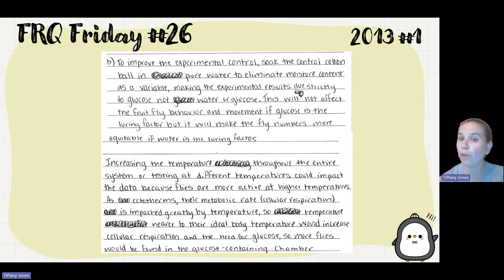So a student said, to improve the experimental control, soak the cotton ball in pure water to eliminate moisture content as a variable, making the experimental results due strictly to glucose, not water or glucose. This will not affect the fruit fly behavior and movement if glucose is the alluring factor, but it will make the fly numbers more equitable if water is the alluring factor.